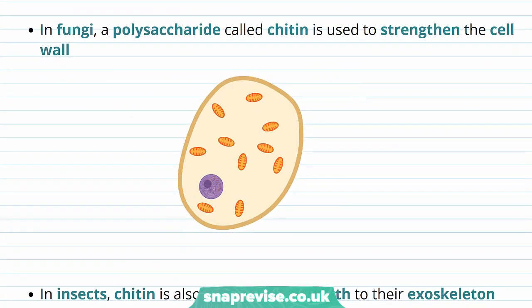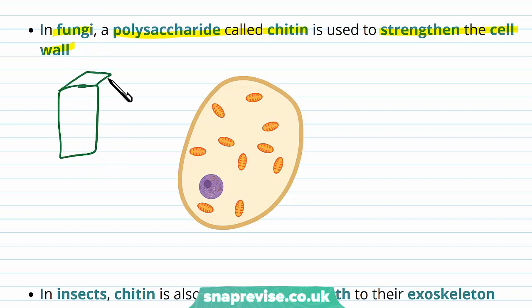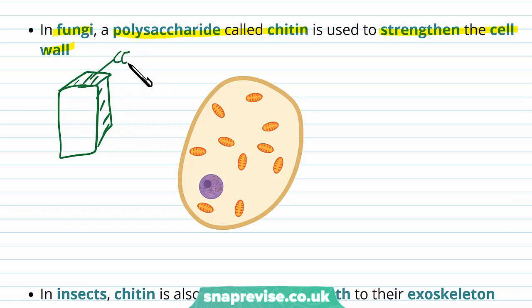In the cells of fungi, the polysaccharide known as chitin is used to strengthen the cell walls. In plant cells, we talked about cell walls surrounding the cell, giving rigidity and structure to the overall cell and therefore the overall plant — but those were made of cellulose. In fungal cells, the cell walls are made of a slightly different material known as chitin.